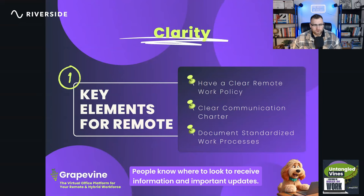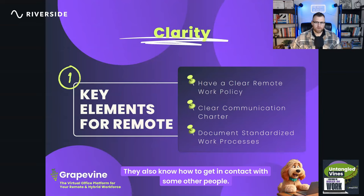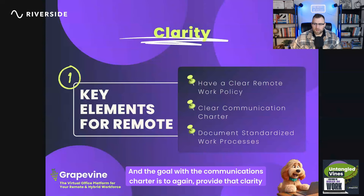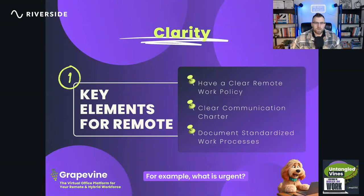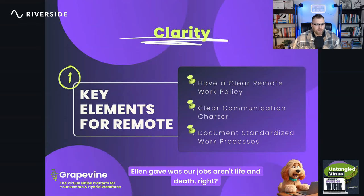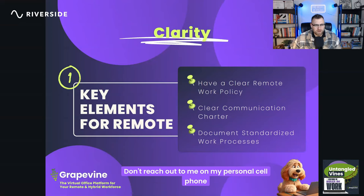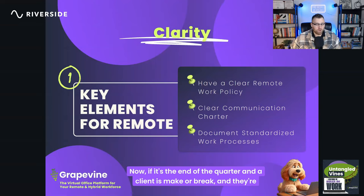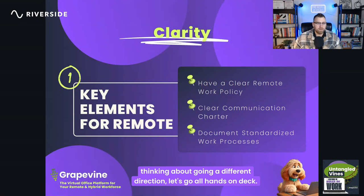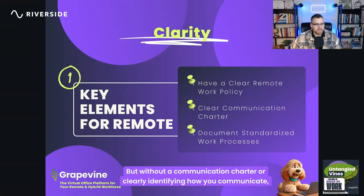They also know how to get in contact with people. The goal of the communications charter is to provide clarity — for example, what is considered urgent? The example Tammy gave was: our jobs aren't life and death. A typo on the website isn't urgent — don't reach out on someone's personal cell phone for that. But if it's end of quarter and a client is make-or-break, go all hands on deck. Without a communication charter, how do you know where to go?